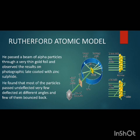Alpha rays were directed at the gold foil, which was 0.00004 cm thick. The alpha particles emerged from the radioactive source through a slit, struck the gold foil, and the results were observed on the photographic plate.